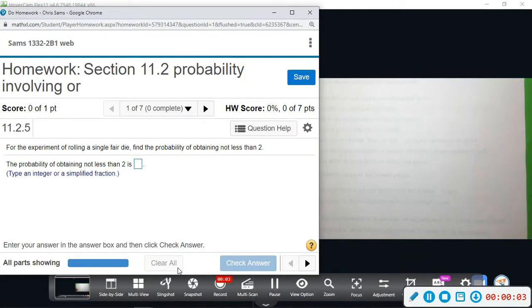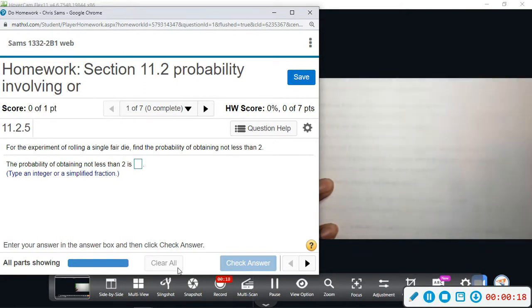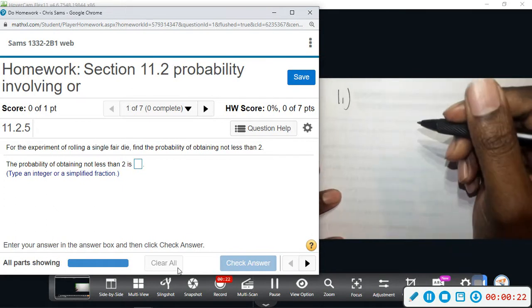All right, section 11.2 is probability involving 'or'. The word 'or' indicates we're going to add something if we need to. This first problem says the experiment of rolling a single fair die...